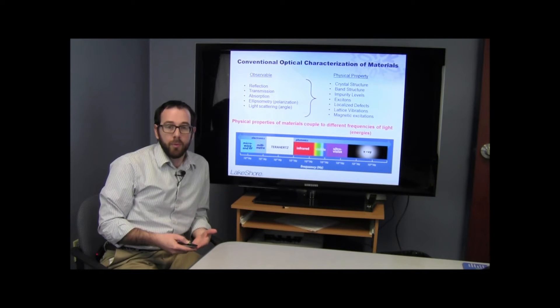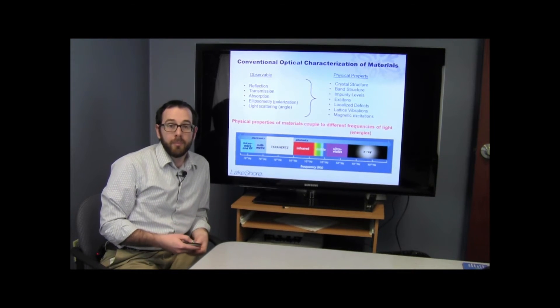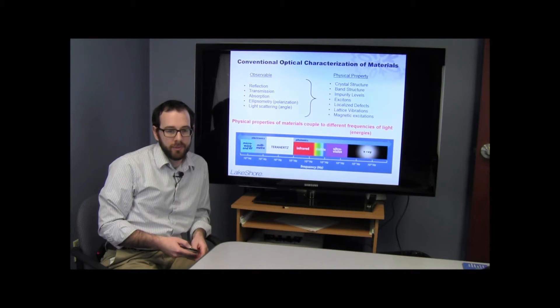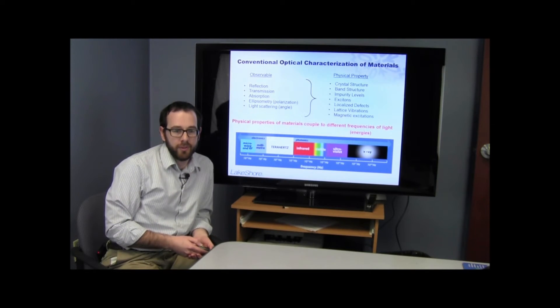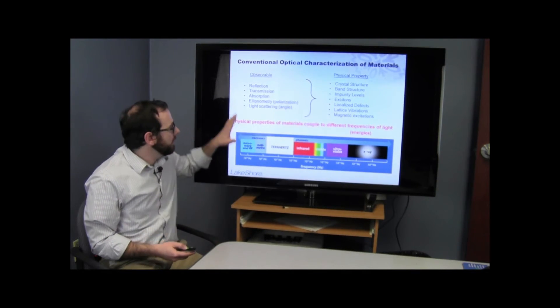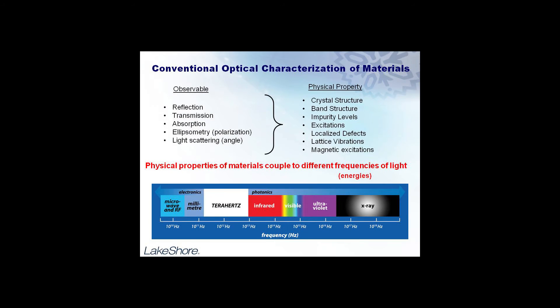To understand that a little bit better, we want to go back and unpack some of the conventional optical characterization techniques that have been used in materials for many years. When we think about conventional optical characterization techniques, we have observables — and those observables include things like reflection and transmission, as well as absorption, ellipsometry, and the angular scattering of light as light interacts with the material.